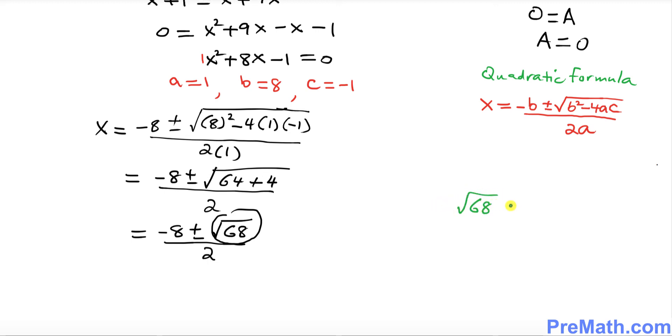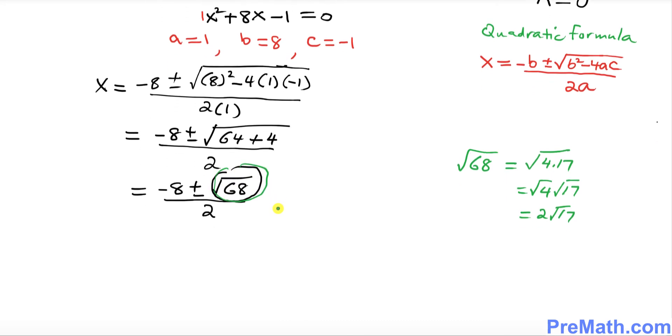And then you can break them down, you can put 4 and 17. Now square root of 4 is 2, square root of 17. So wherever you see this part, I'm going to just replace it.